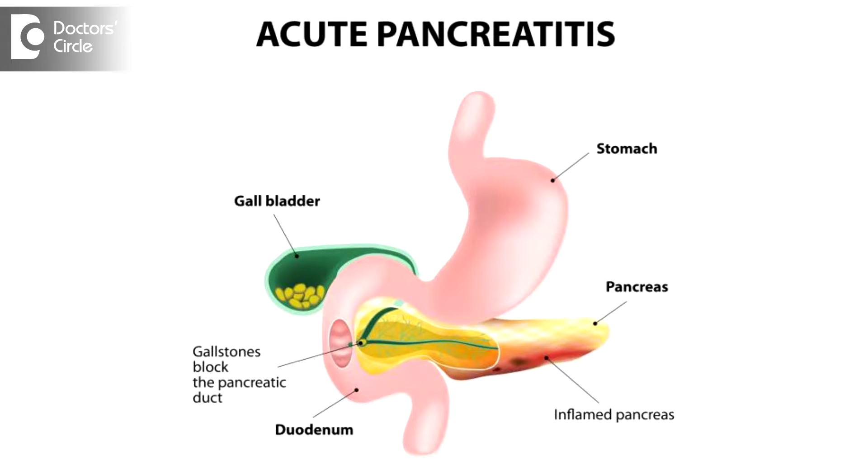The secretions of the pancreas are known to digest a lot of proteins and lipid foods in the intestine. When the food reaches the duodenum, it gets mixed and changes the chemical content of the food itself, increasing and improving the digestion of the food.